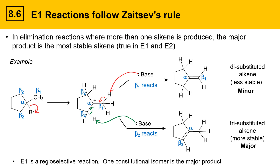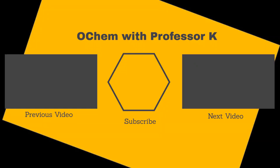E1 is a regioselective reaction, meaning one constitutional isomer product is the major product. In this case the trisubstituted, more highly substituted alkene is favored. This is similar to E2 in that both reactions prefer the more highly substituted product. If you found this video useful, check out the next one in the series or watch the prior video, and consider subscribing to my YouTube channel. My name is Brant Kedrowski — thanks for watching.